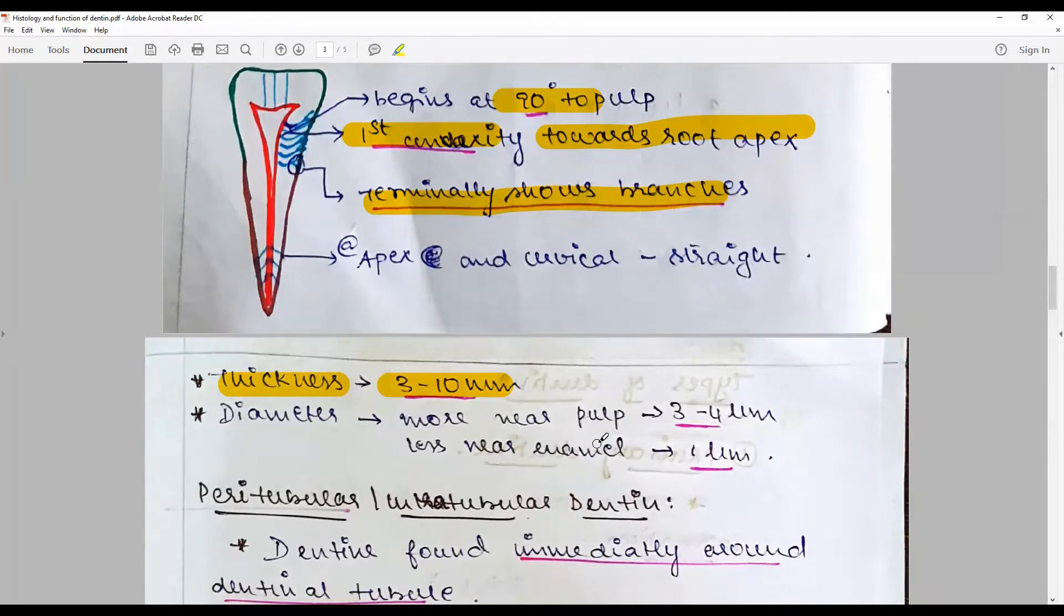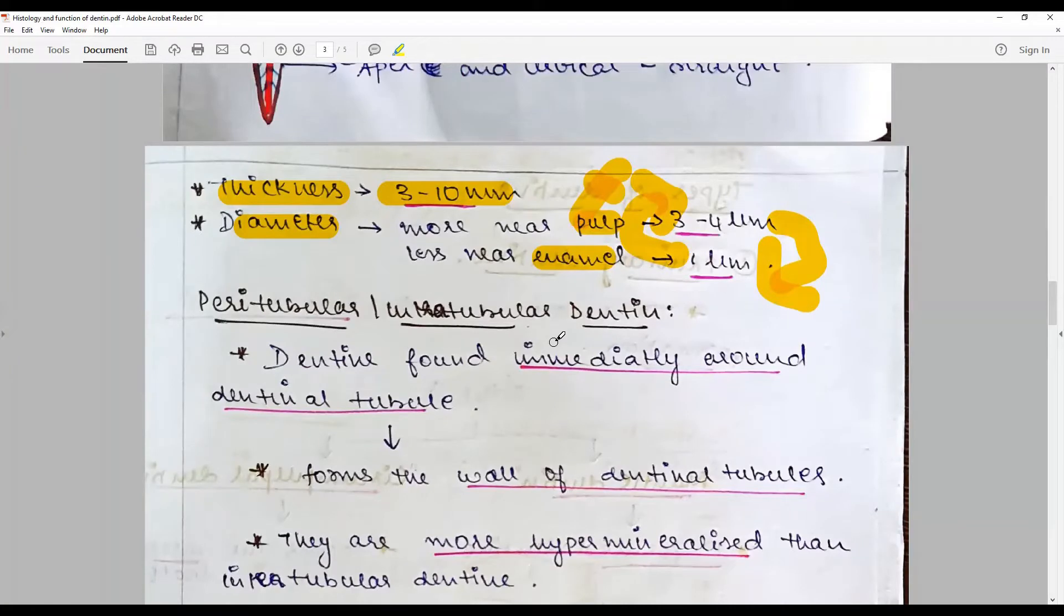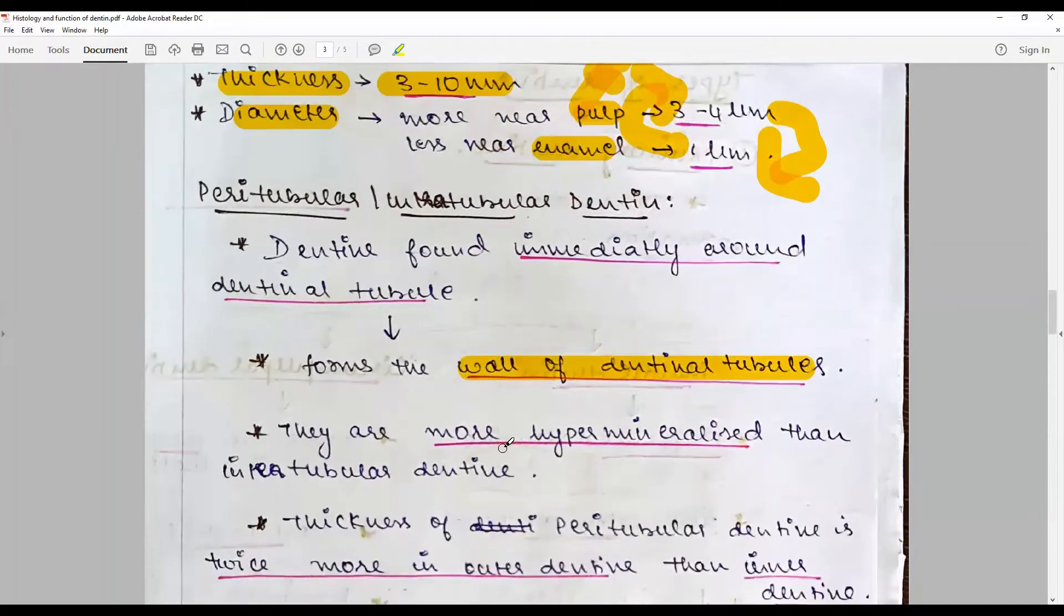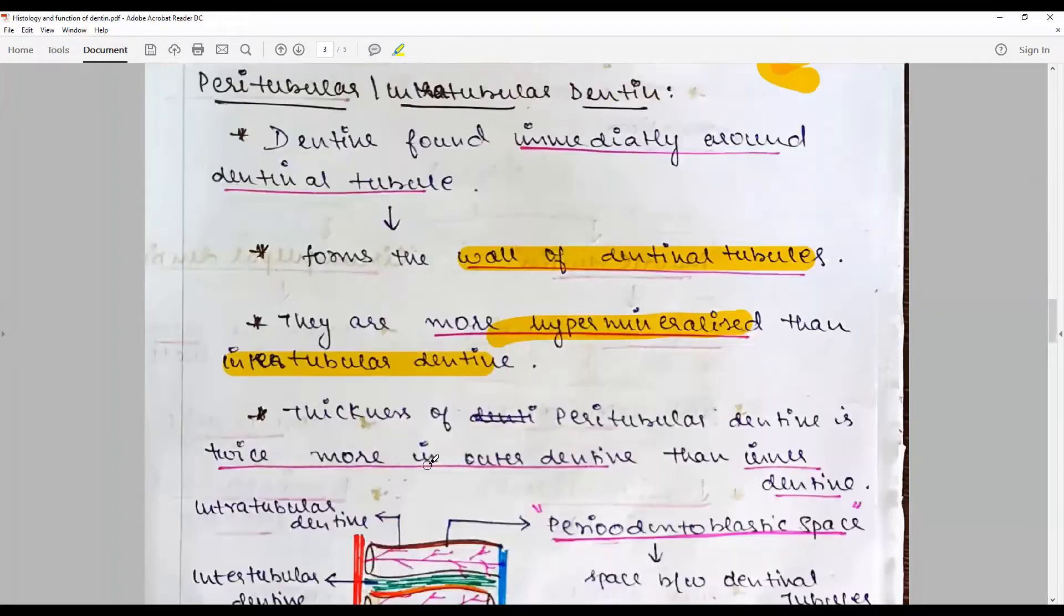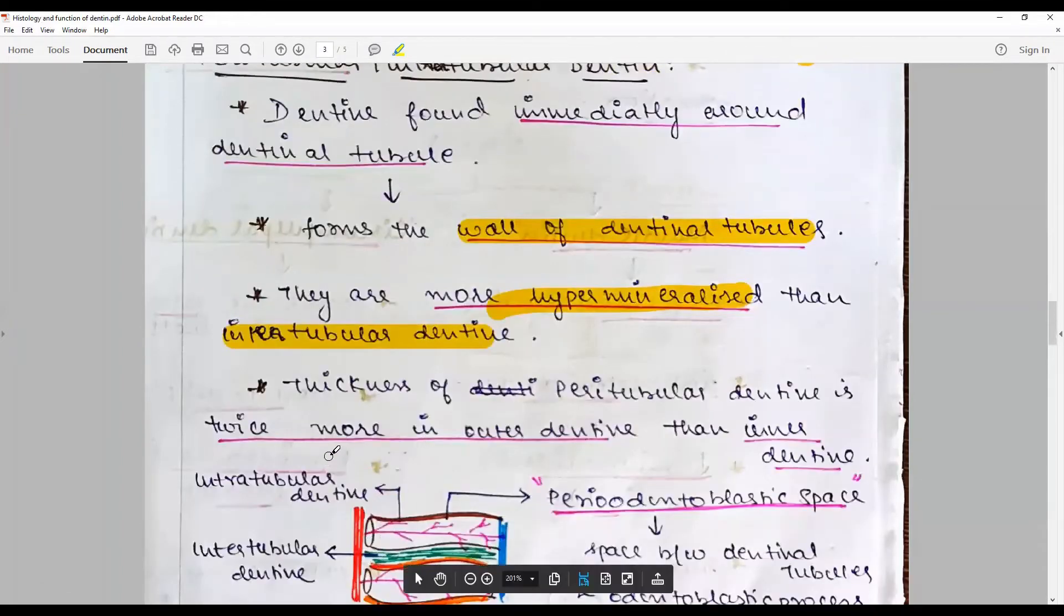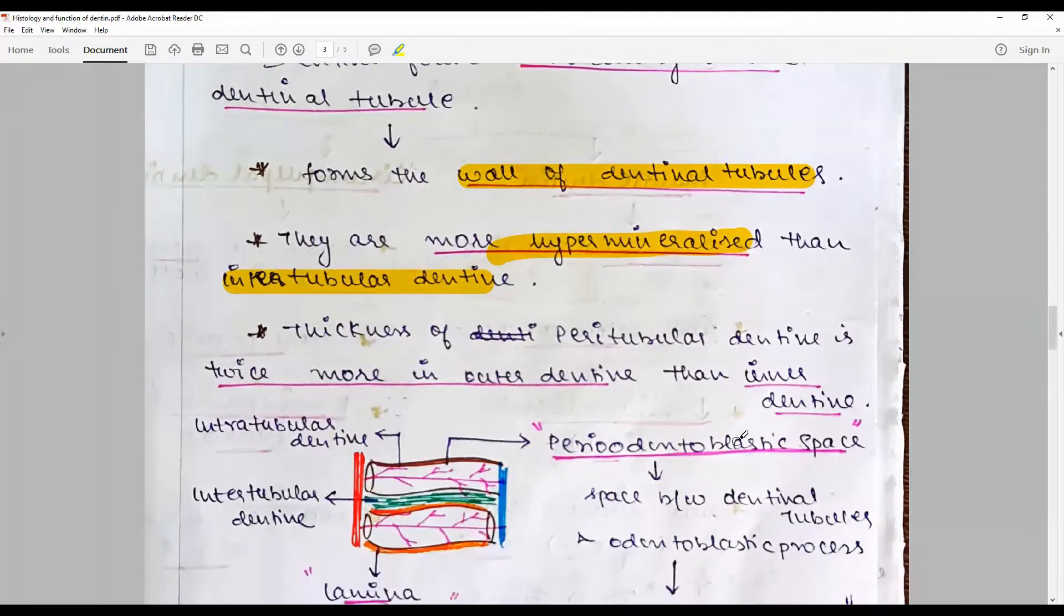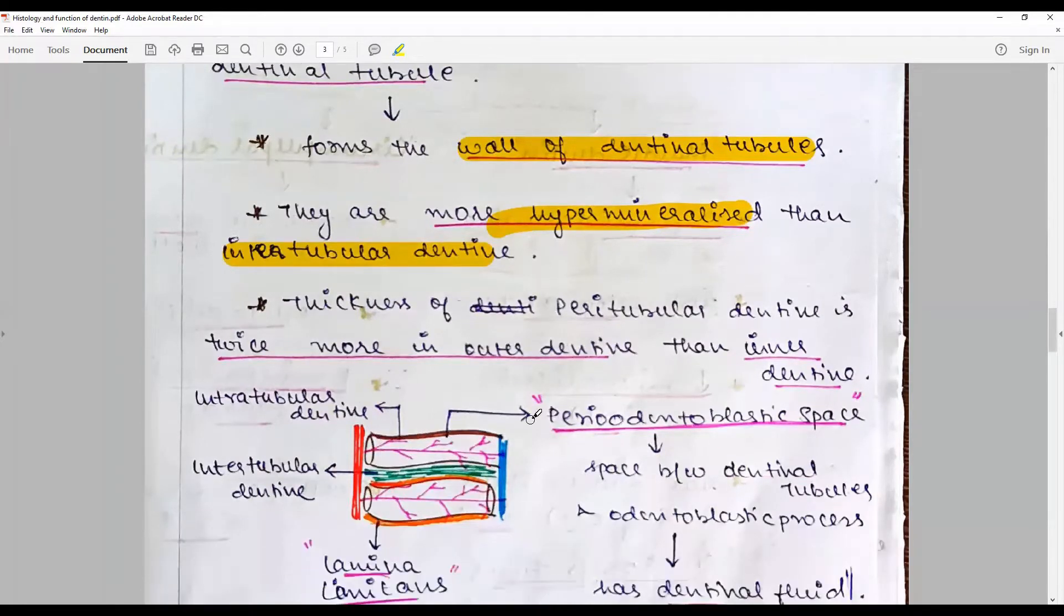Peritubular or intratubular dentin is the type of dentin that is found around the dentinal tubules and forms the wall. They are relatively more hypermineralized than intratubular dentin. Intratubular dentin is the one making the dentinal tubule. The thickness of peritubular dentin is twice more in the outer dentine than in the inner dentine part. Between this you have a periodontoblastic space.